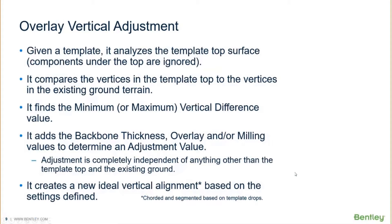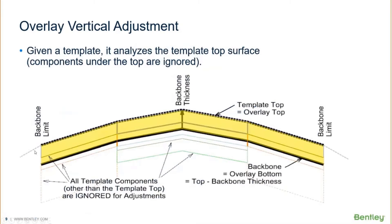So what's this actually doing? If you have a template — it could be any template — the minimum criteria is you need a top surface. If you have components underneath, that's fine, but it's not going to be looking at those components. It's only going to be analyzing the top surface, just the template points and the top surface. Anything underneath it ignores. That's why when you use this tool, you technically can just have an open component on the top that represents your pavement surface just to begin.